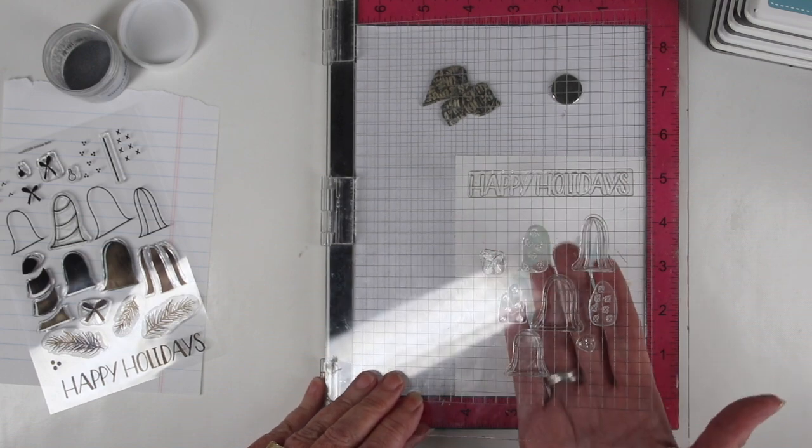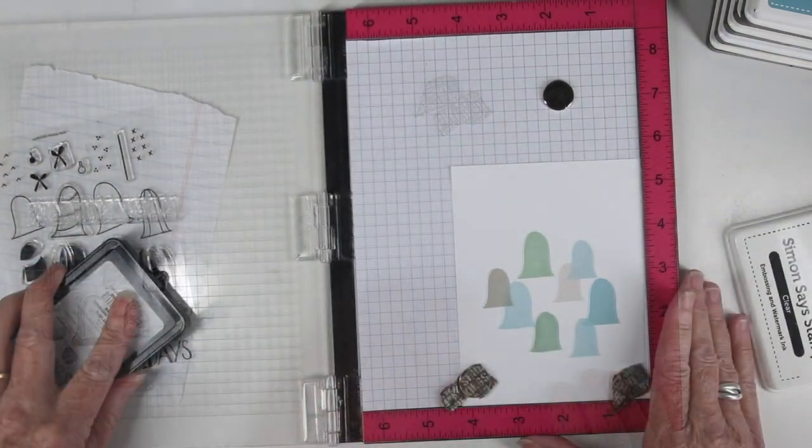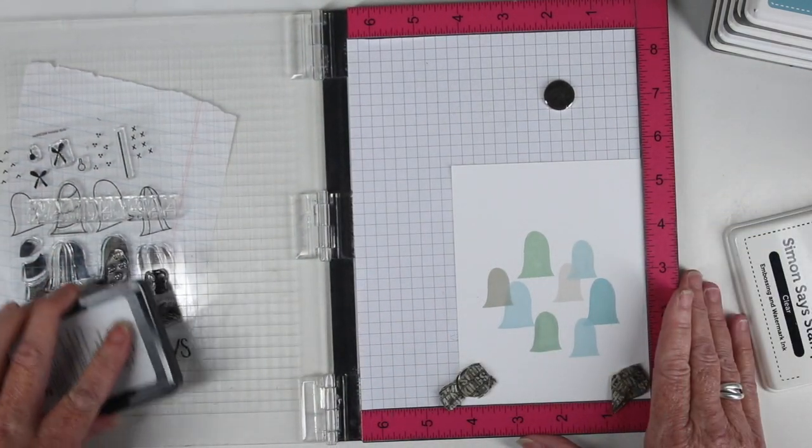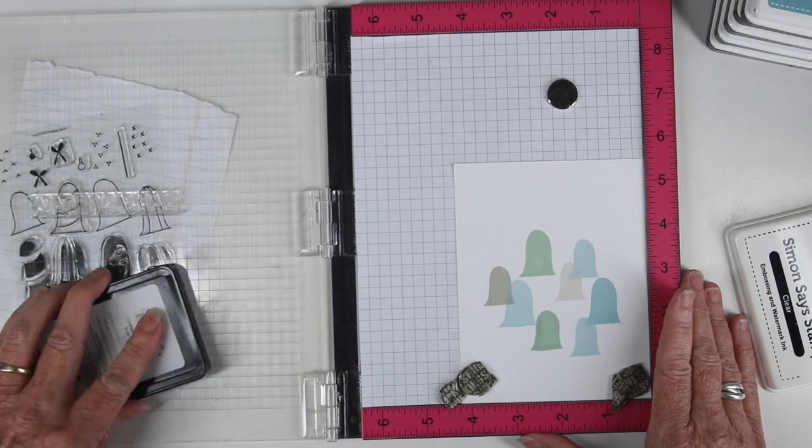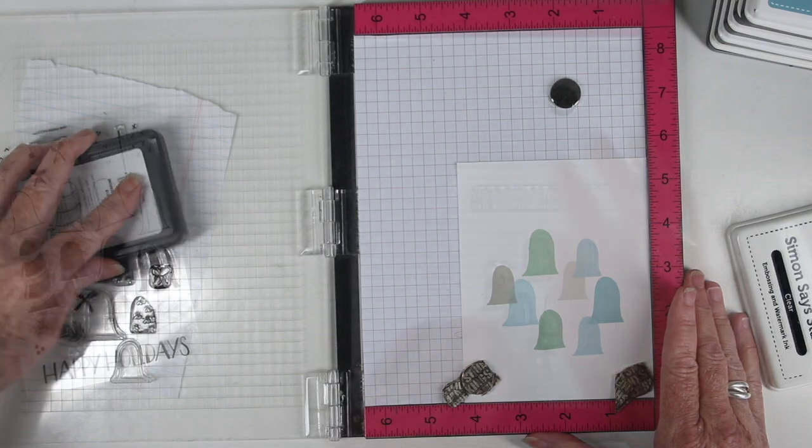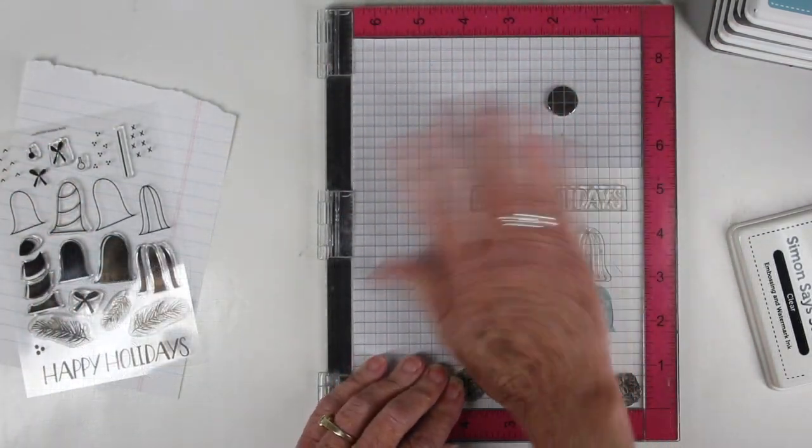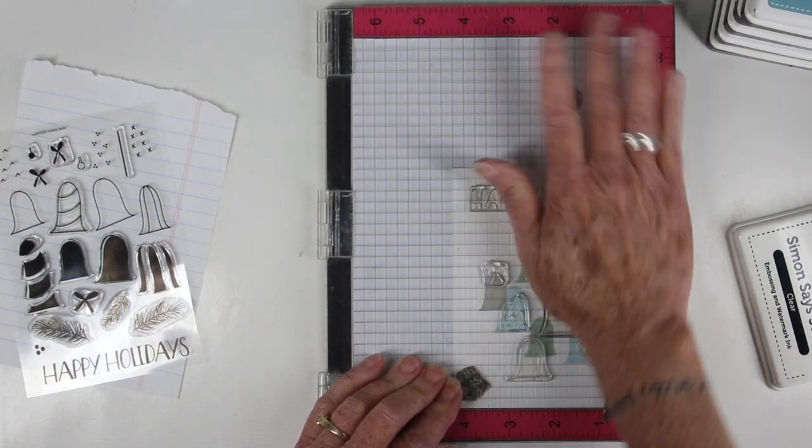So I've laid some of the outline stamps and those details that go inside the bells onto my MISTI and I'll be inking this up with SimonSaysStamp clear ink and I'll make sure that I ink this up really well to get some good coverage. You can also stamp over this twice just to make sure that you have everything covered. It's hard to see because the ink is completely clear.